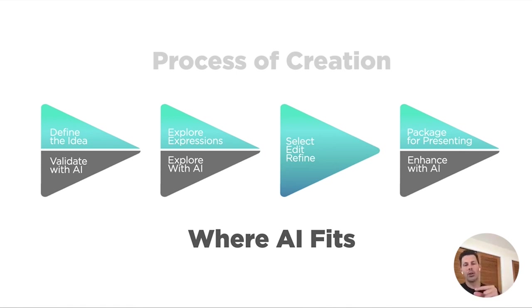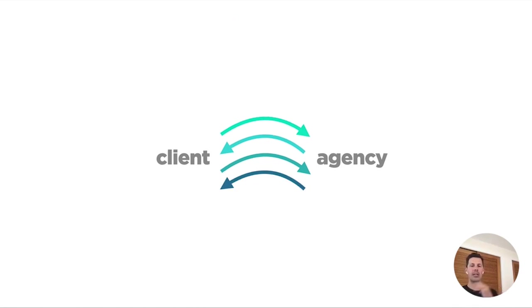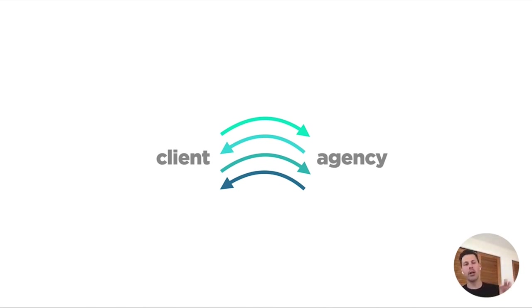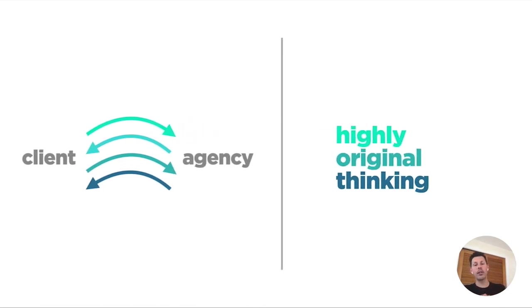Which processes are future-proof or more safe? If you have a process that's a back-and-forth between the agency and client to define what the client needs — where there's collaboration between client and agency — AI cannot replace that. A lot of times you're like a psychiatrist for the client, helping them decide between many different stakeholders — the marketing director, head of brand, general director — who might have different visions. It's very difficult for AI to do that.